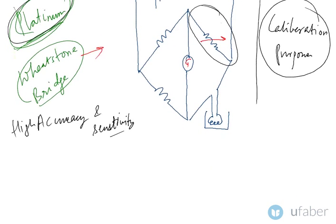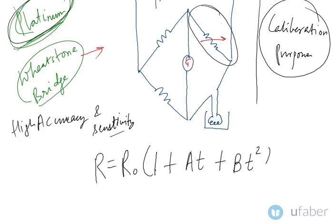The quadratic equation used to define resistance as a function of temperature is: R = R₀(1 + aT + bT²). Here R is the resistance at any temperature T, R₀ is the resistance at 0°C, and a and b are constants whose values have to be found out. This equation is used to find the resistance at any temperature.